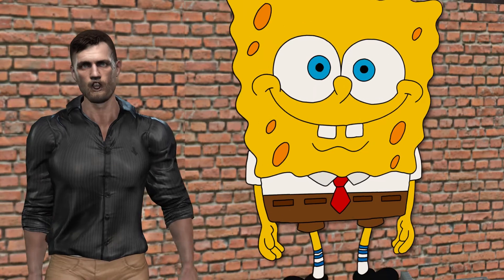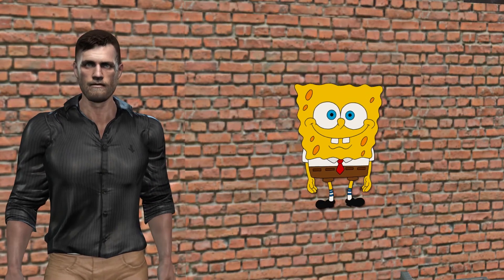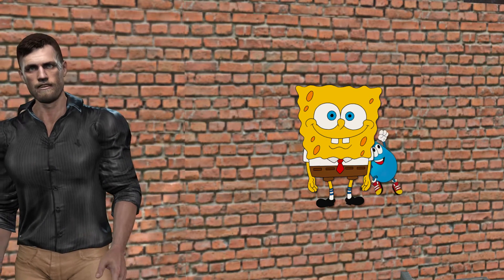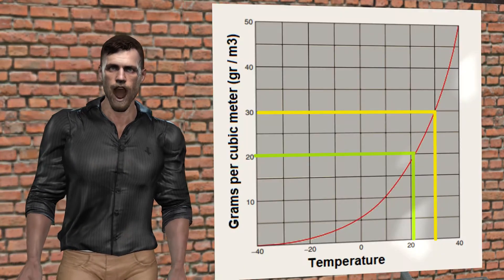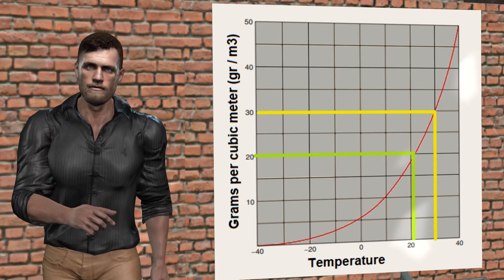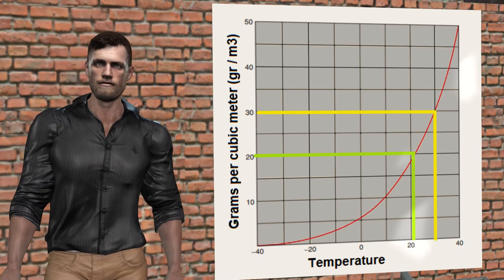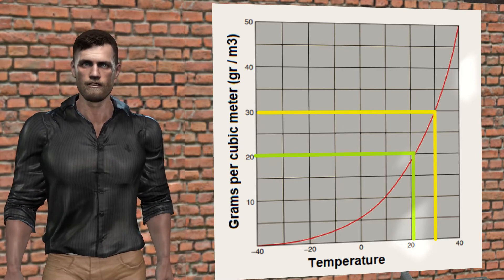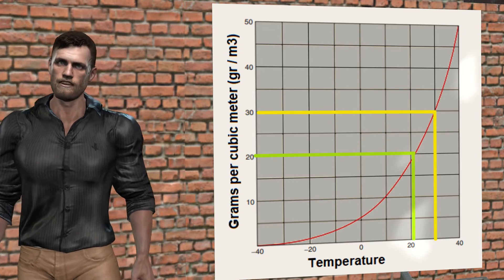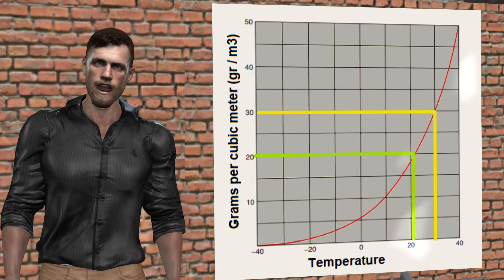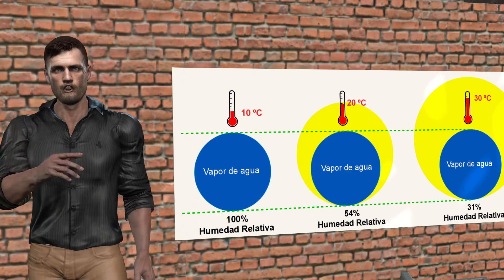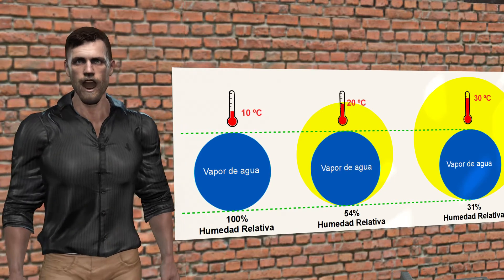It is as if the sponge gets bigger when the temperature rises and shrinks when the temperature drops. And what happens to a damp sponge when we compress it? The water it contains begins to flow. Something similar happens with air. As the air cools, its capacity to contain water vapor will be reduced. If the temperature continues to drop, there will come a time when this capacity to hold water vapor exactly matches the current concentration of water vapor. At that moment we say that the air is saturated with water vapor, and that temperature is called the dew point.